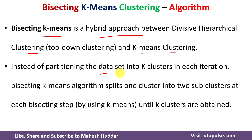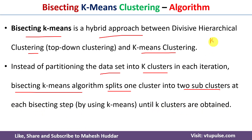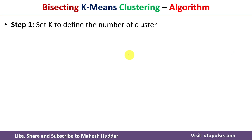In k-means clustering, at every step we divide the dataset into k clusters and come up with the final clusters. But in bisecting k-means clustering algorithm, we split one cluster into two sub-clusters at each bisecting step until we get k clusters. For example, if k equals four, in standard k-means we divide the dataset into four clusters each iteration, but in bisecting k-means we divide into two clusters at every iteration until we get four clusters.